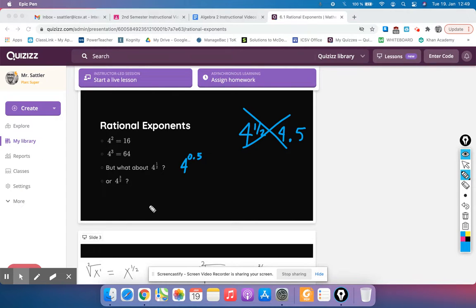Or what about 4 to the 3 halves, meaning the 3 over 2 is in the exponent, which another way you could write is 4 to the 1.5, 3 over 2 is equal to 1.5. So how would we evaluate this? Like what is this equal to if we could simplify it a little bit further?